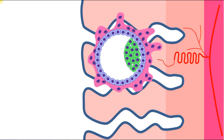Before implantation, the embryo receives nutrients from yolk inclusions present in the cytoplasm of the ovum. During invasion, the embryo receives nutrients from the destroyed uterine wall and uterine glands — this is called histotrophic nutrition ('histo' meaning tissues). Then the trophoblast grows to reach the mother's blood vessels, and blood fills lacunae — cavities — allowing the embryo to receive nutrients from the mother's blood. This is called hematotrophic nutrition.